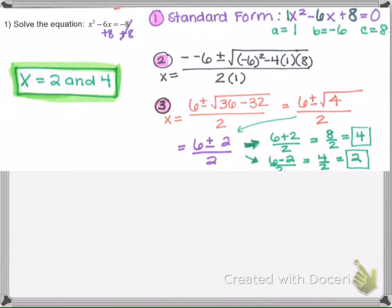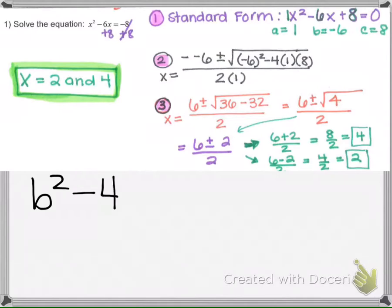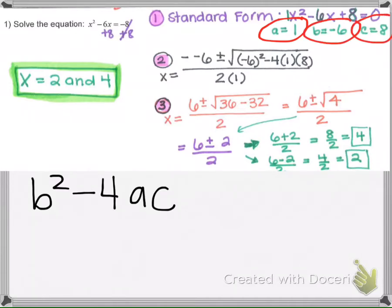If you go back in your notes to example 1, take a look at the work we did. We used the quadratic formula and ended up getting two answers, 4 and 2, which are rational — they could be written as a fraction, like 8 over 2 or 4 over 2. We could have known before even solving this that we were going to have two rational answers, because if we take B squared minus 4AC and plug in 1 for A, negative 6 for B, and 8 for C, let's see what happens.